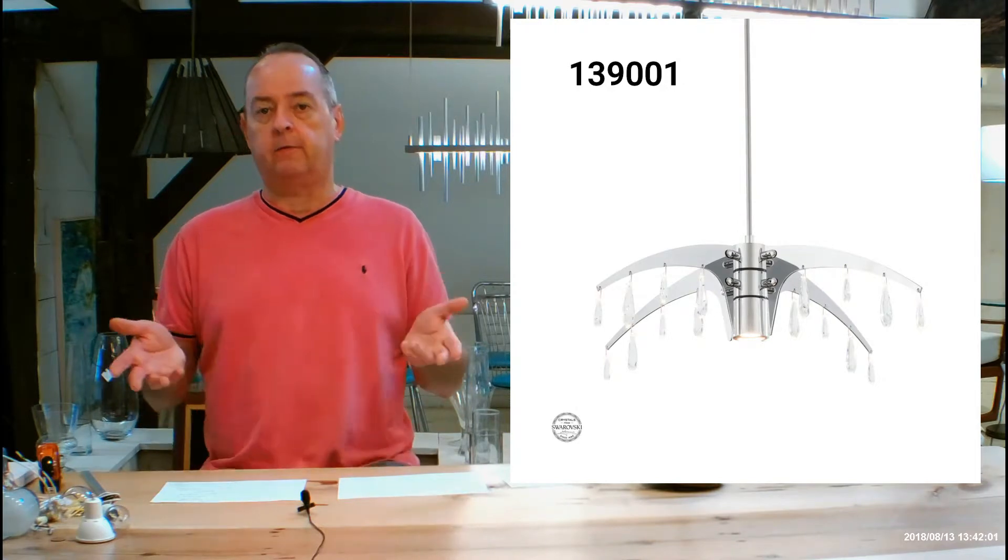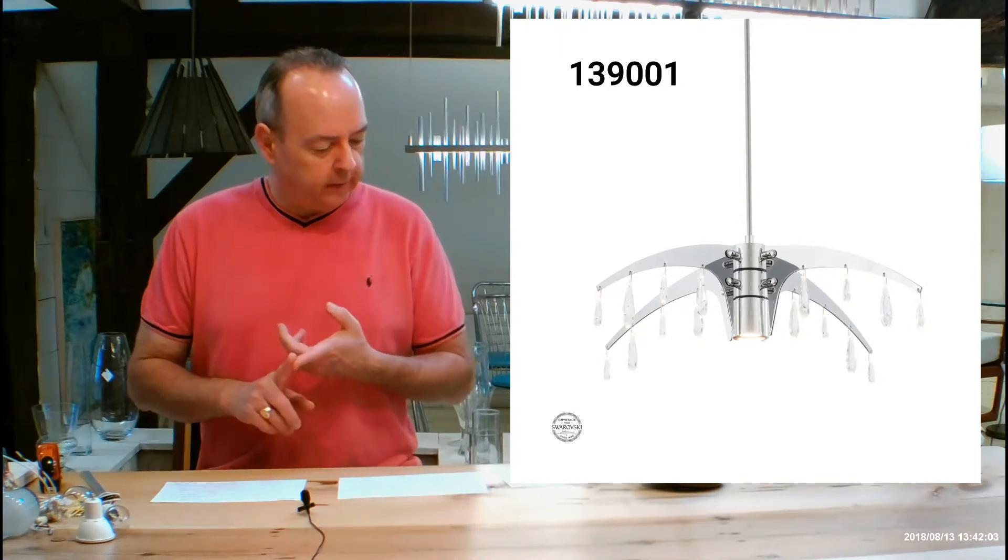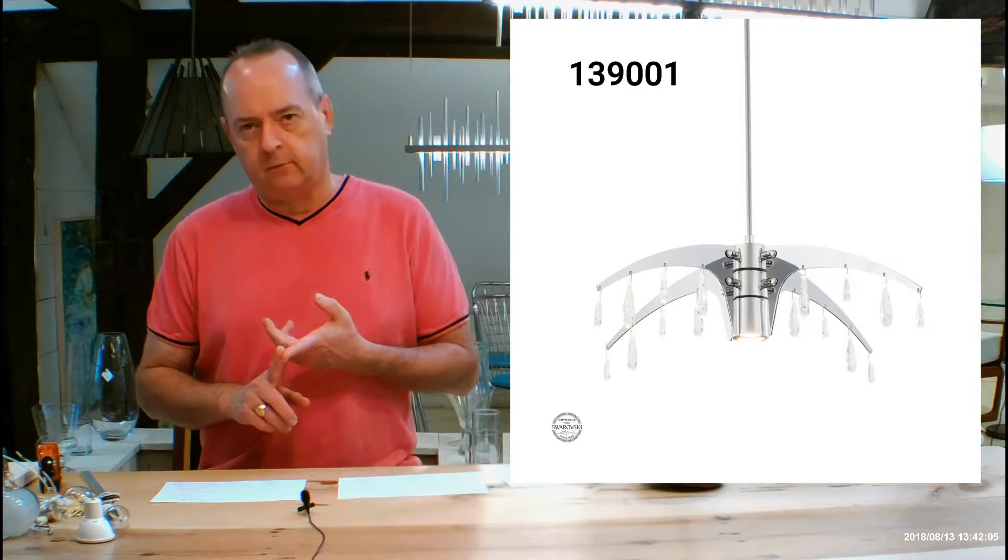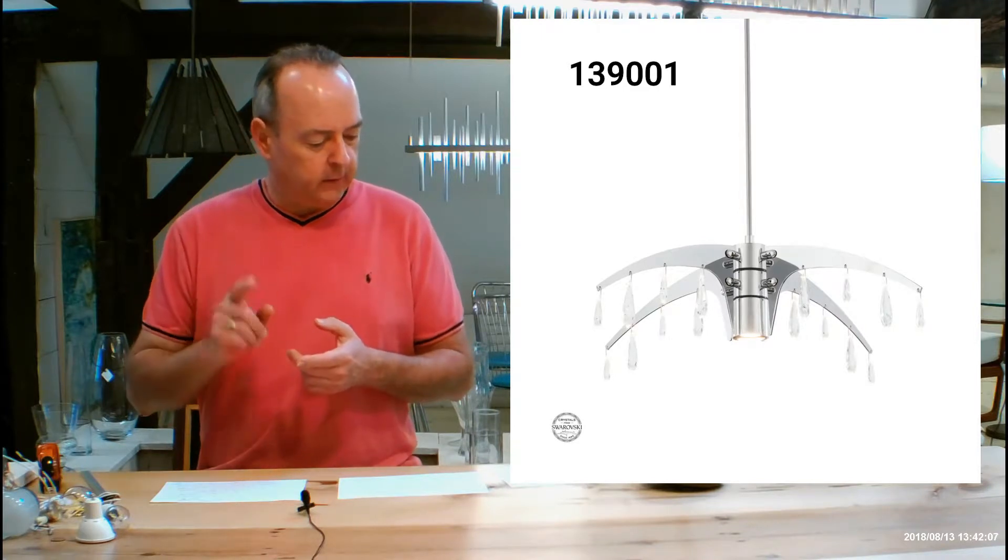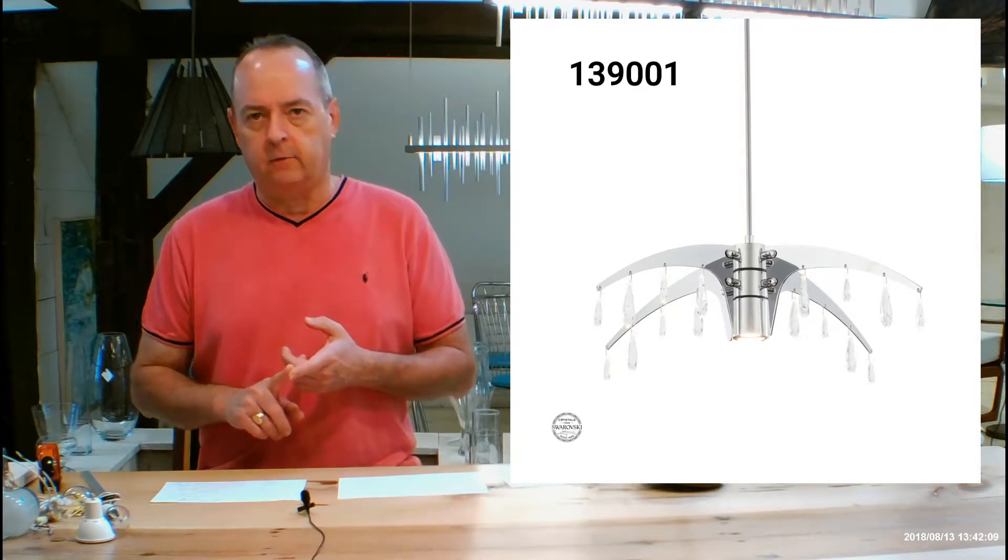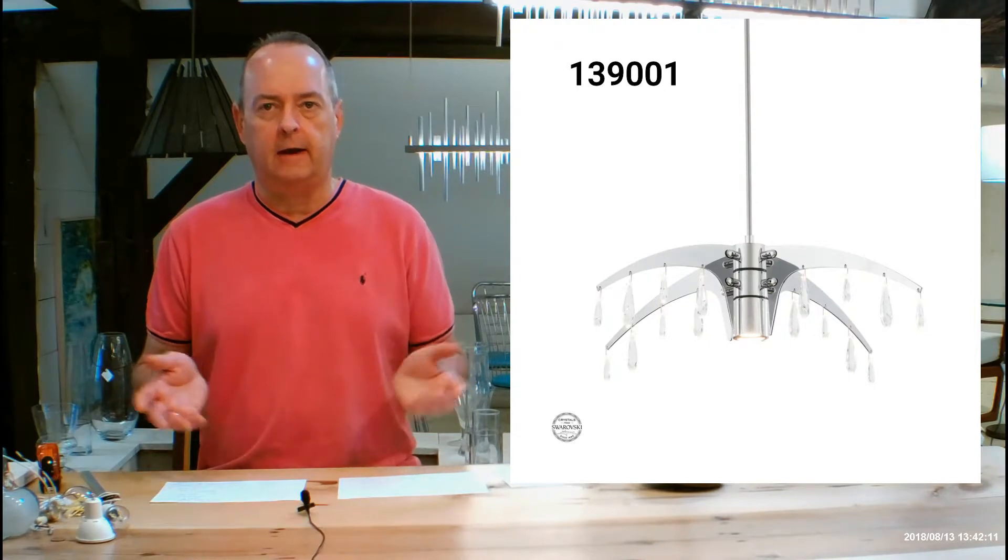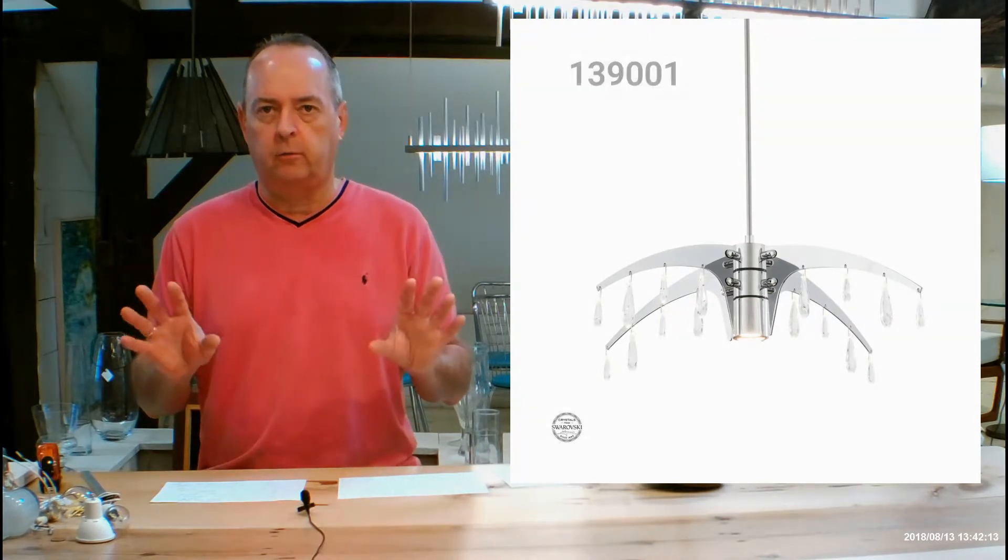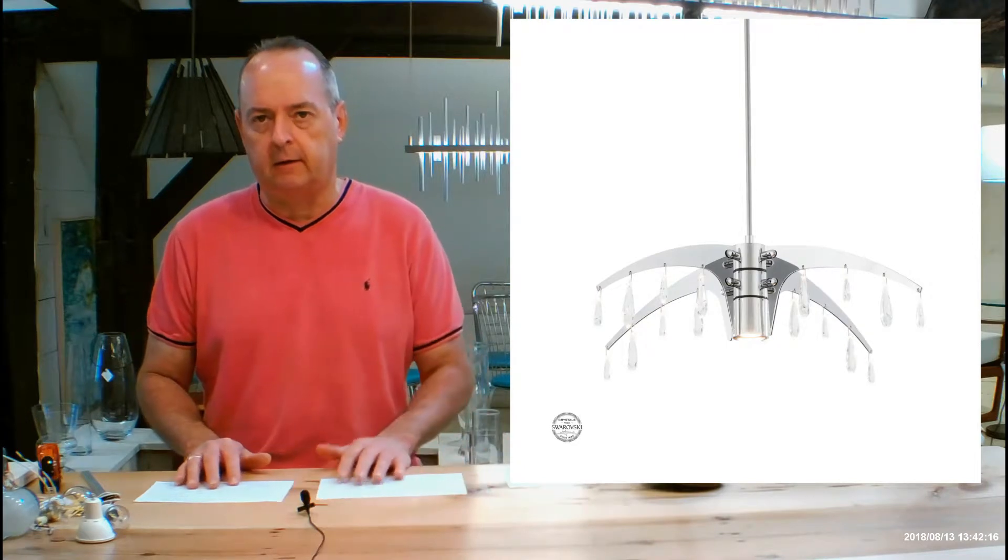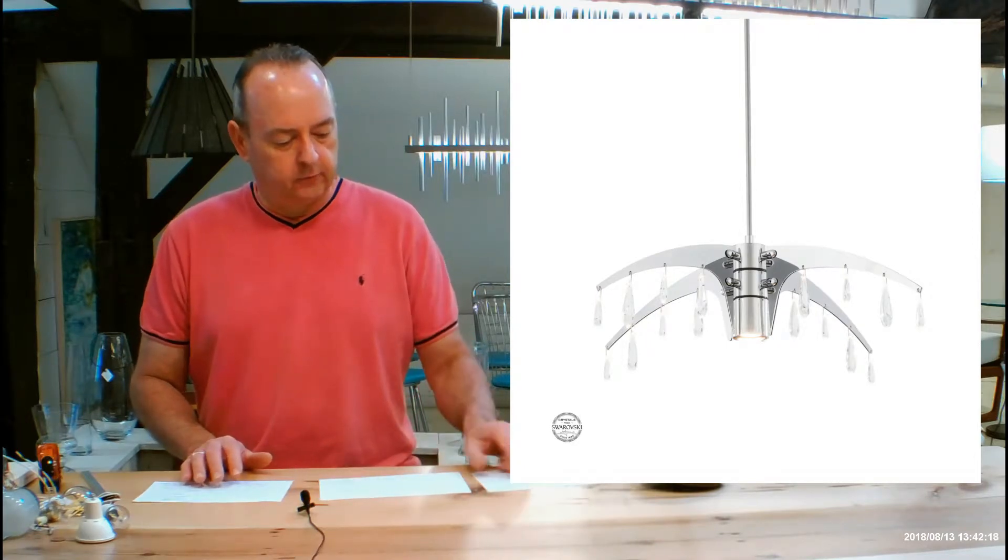There are a couple other pendants you should check out if you like this one. Check out the Rain Circular Pendant, the 139004, and the Rain Orb, 139005. An easy way to do that is hop on our YouTube channel, handmadeinvermont.com, and just put in those numbers.